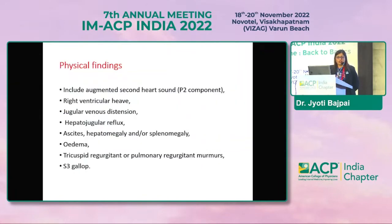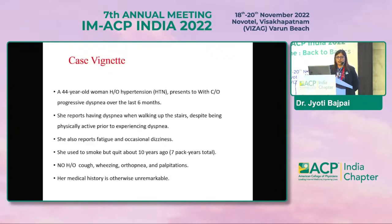Physical findings include raised second heart sound, right ventricular heave, JVP distension, hepatojugular reflex, ascites, hepatomegaly, splenomegaly, edema, TR and PR murmurs, and cyanosis.